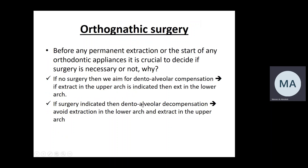For the surgical option: before any permanent teeth extraction or appliance fitting, it is essential to decide surgery or no surgery — we cannot start and then reassess. The tooth movement for non-surgical treatment is the complete opposite of surgical preparation. Without surgery, we apply dental alveolar compensation: proclining upper incisors, retroclining lower incisors, possible lower arch extraction. With surgery, we go for dental alveolar decompensation: normalizing tooth positions, which means retroclining upper incisors, proclining lower incisors, and possible upper arch extraction. This decision must be made before starting any orthodontic treatment.